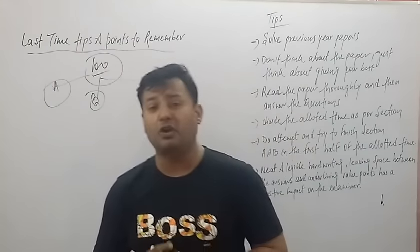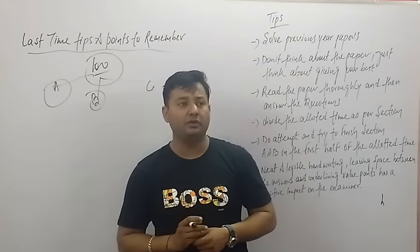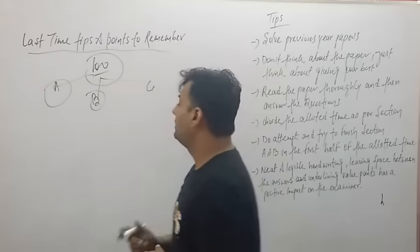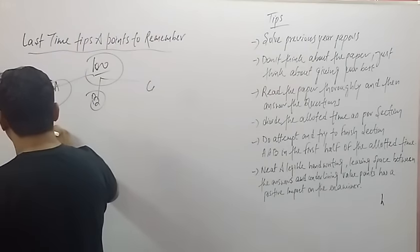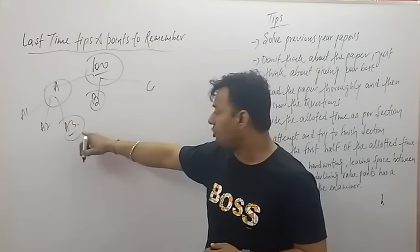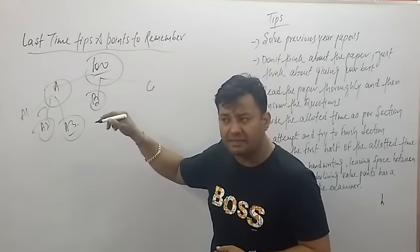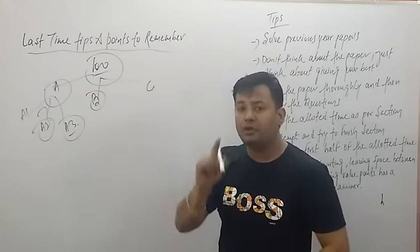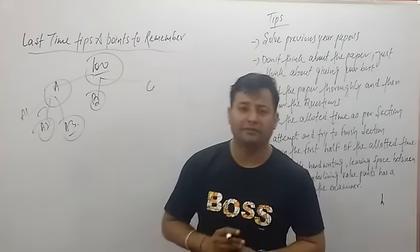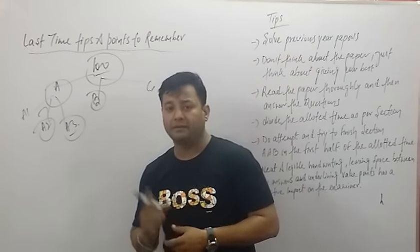The comprehension section includes two shorter comprehensions — the unseen passage and one note-making passage. There are sub-questions A1, A2, and A3. You also need to prepare yourself for the poetry comprehension. For detailed guidance on how to work out the comprehension of poetry, you can check out my other videos.